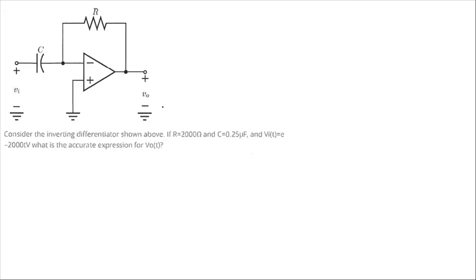Bismillahirrahmanirrahim. Assalamu alaikum. In this lecture we are going to solve some numerical problems on op-amps. We are given a circuit which is actually a differentiator and we are asked to find v_naught(t). R is given as 2000 ohm, C is 0.25 microfarad, and the input voltage is e to the power minus 2000t. We need to find the voltage v_naught.